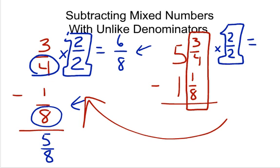3/4 times 2/2, multiplying straight across, we get 6/8. Now this 6/8 minus 1/8, we can do.